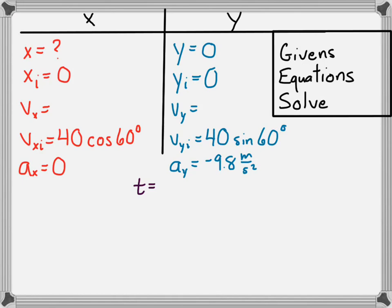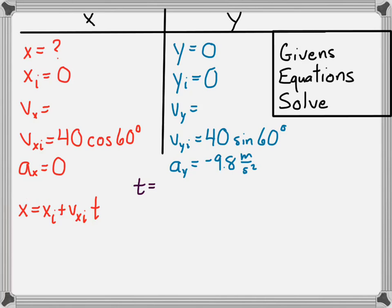Let's write down our equations for the x direction. The position equation is: x equals x-initial plus v-xi times t. Normally we'd add one half at squared, but since acceleration in the x direction is zero, we drop that term. The other equation states that final velocity in x equals initial velocity in x — since there's no acceleration, velocity remains constant.